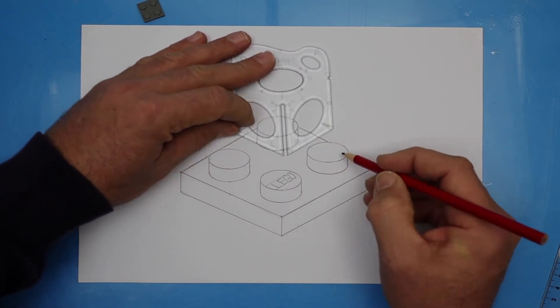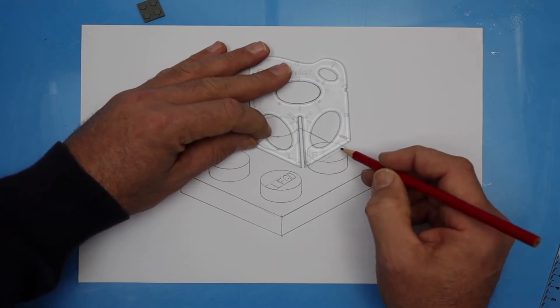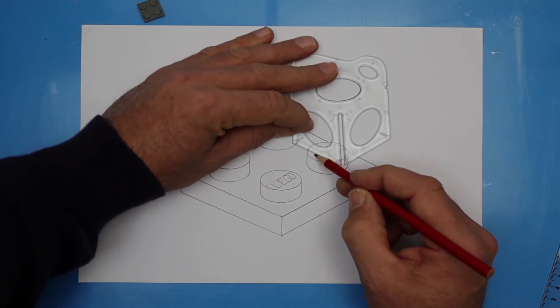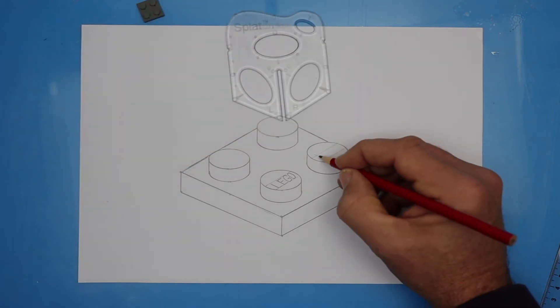And even the letters go back in the other isometric direction. On this stud, let's try again. So we've got two guidelines on the right angle, and on the left angle is another guideline that I'll use for my letter L.